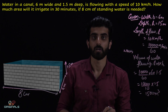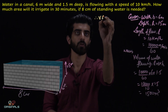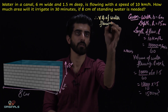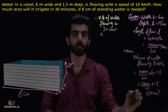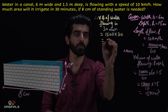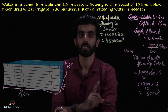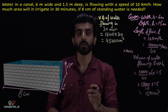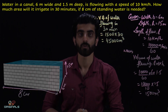So in 30 minutes, the volume of water flowing through this canal: volume of water flowing in 30 minutes will be 1500 multiplied by 30, which is equal to 45,000 cubic meters. In 1 minute, volume of water flow is 1500 cubic meters, so in 30 minutes, the total volume of water flowing through the canal will be 45,000 cubic meters.